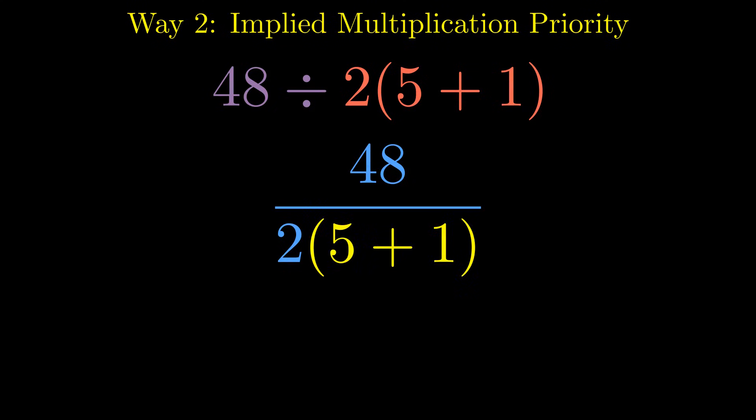We still handle the parentheses first, getting 6. Now, we evaluate the entire denominator. 2 times 6 is 12. And we get 4. Same expression, different way, completely different answer.